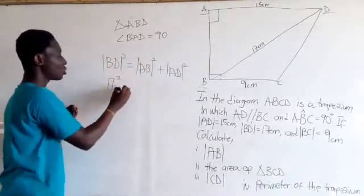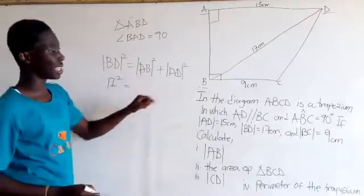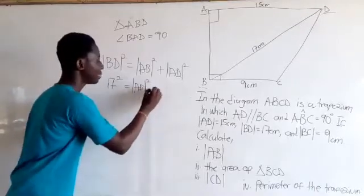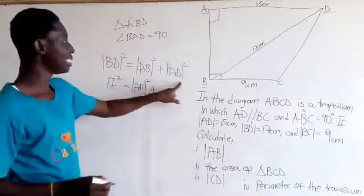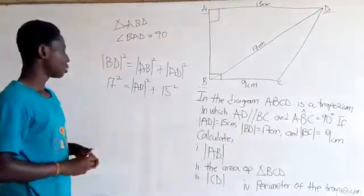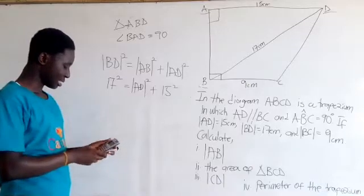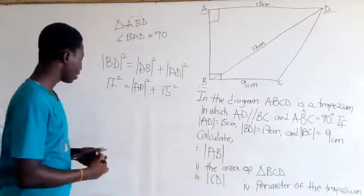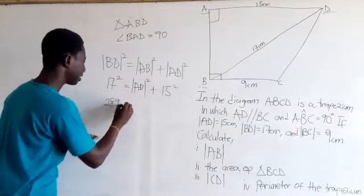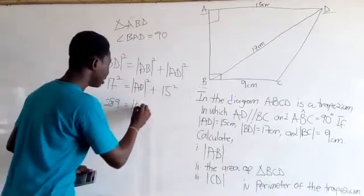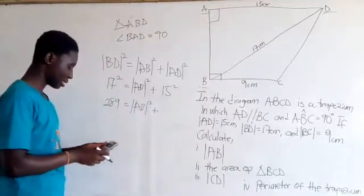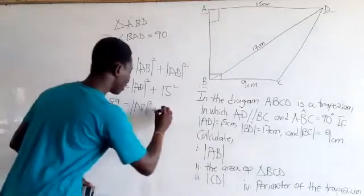So 17 squared equals AB squared plus AD squared. AB is what we are looking for, and AD is 15cm. So 17 squared gives us 289, which equals AB squared plus 15 squared, which is 225.